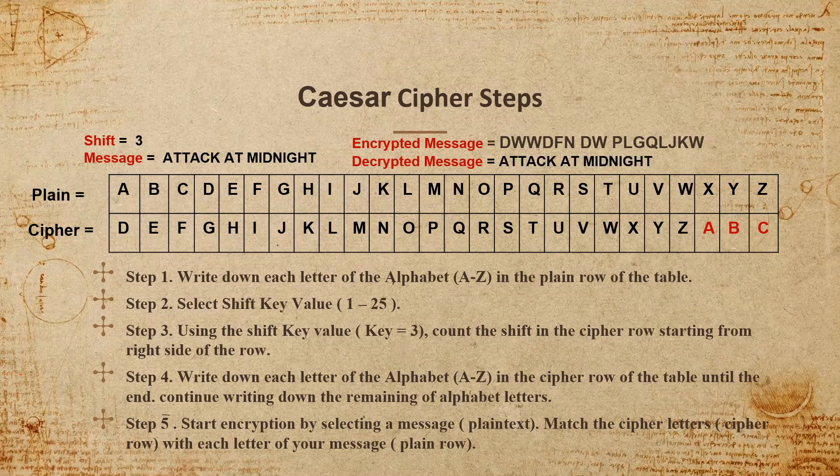That's it for the Caesar cipher encryption and decryption steps. We encrypted a message using the shift value by creating a table, then decrypted the message using the same shift value and the same table. That's it for this tutorial — I hope you enjoyed it. Thank you so much for watching. Talk to you later, bye bye.